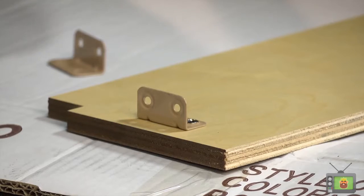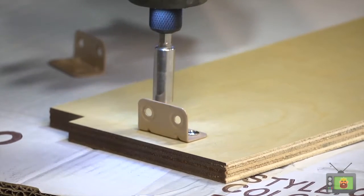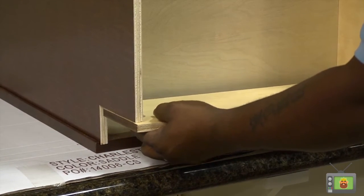Installation of the toe kick can be done with nailer or clips. Pre-install the clips onto the toe kick and fasten it and the sides together.